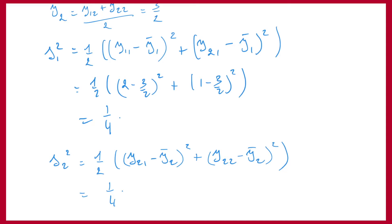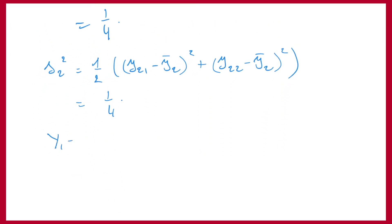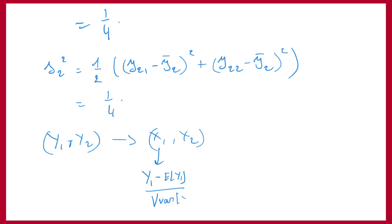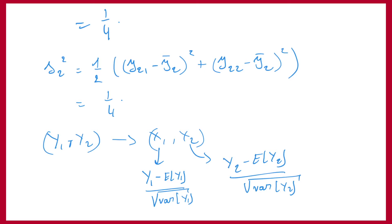Now we can move from the y-values to the x-values. The transformation from (y1, y2) to (x1, x2) is given by: x1 = (y1 − mean) / standard deviation, and x2 = (y2 − empirical mean) / standard deviation. This is the formula at the level of the random variables. If you have observations y1, y2, we can transform them to x1, x2 by using the empirical mean and empirical standard deviation.